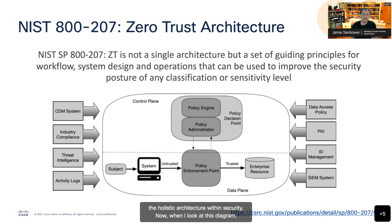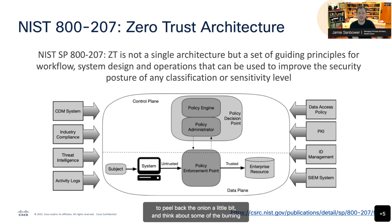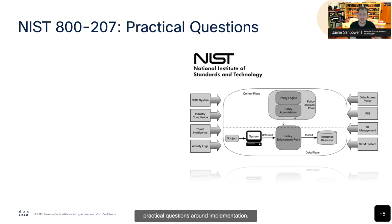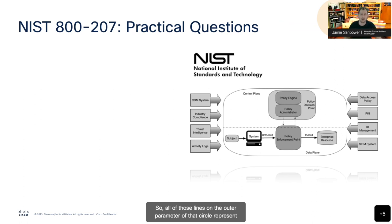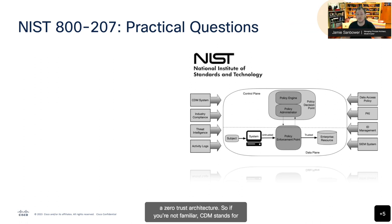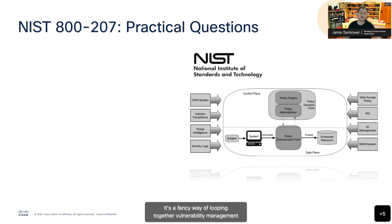When looking at the NIST 800-207 diagram, as developers, peel back the onion and think about some of the burning practical questions around implementation. With this architecture, we've got a policy engine, policy distribution points, and all of these inputs — those lines on the outer perimeter represent integrations of different data and information within a Zero Trust architecture. CDM stands for Continuous Diagnostics and Mitigation — a fancy way of looping together vulnerability management, patch management, and mobile device management. Even that one box could represent five or six different integrations for an enterprise.